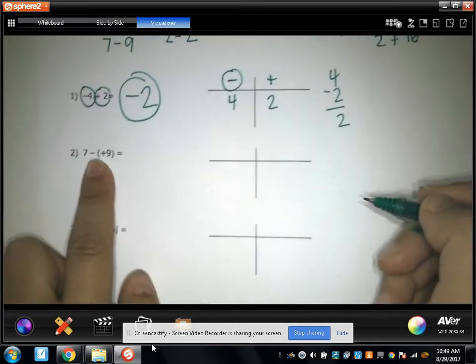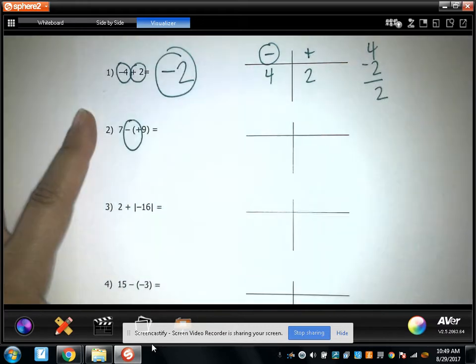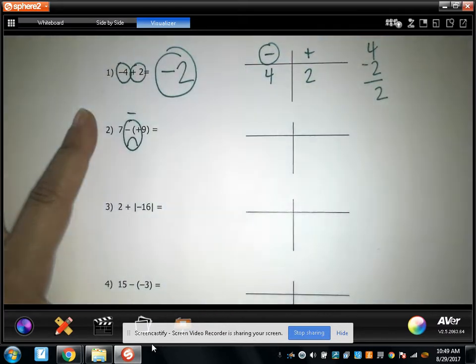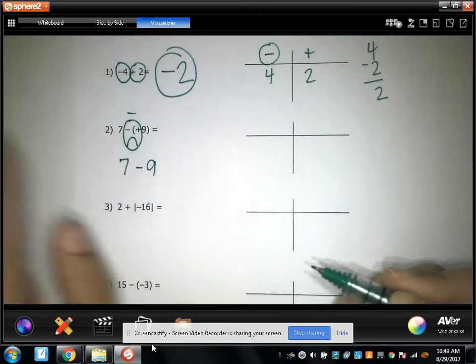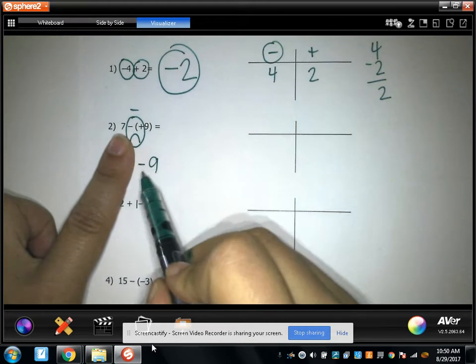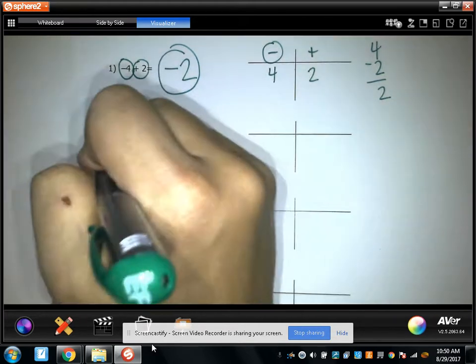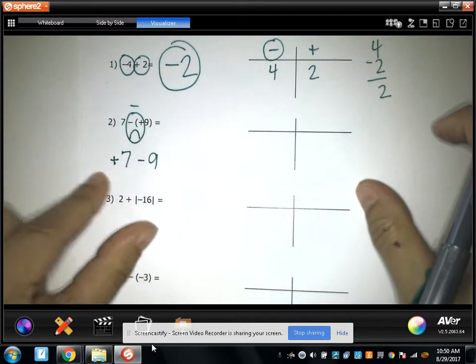All right, we got some double signs here. Let's fix that. This person got hit in the eye. It's very sad. We're going to have to make that a negative. So we have 7 minus 9. Now, I want you guys to note that minus or that negative is going with the 9. Look at the 7. The 7's positive. Even though there's no sign there, 7's positive. So you can add a sign there to remind yourself.